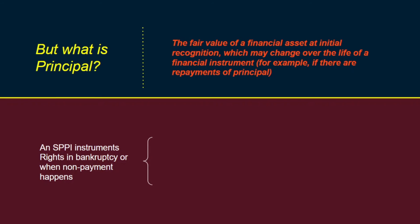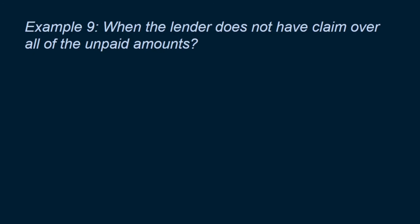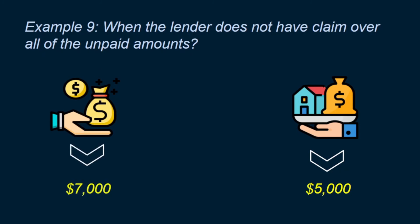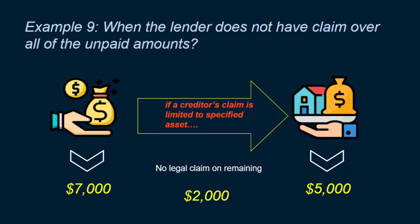You might wonder when a lender would not have the right over unpaid amounts. If the creditor's claim is limited to specified assets of the debtor or the cash flows from specified assets, the creditor may not have the right over all unpaid amounts. For example, if the creditor's claim is limited to an asset worth $5,000 and the unpaid amounts are $7,000, the creditor does not have a legal claim on the remaining $2,000. This is called a non-recourse arrangement. However, simply being non-recourse does not make contractual cash flows non-SPPI — for such arrangements the lender must look through to the underlying asset or cash flows in making this determination.